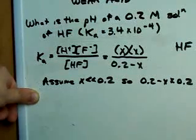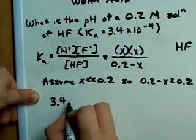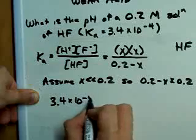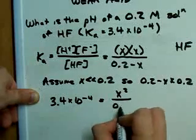Approximate enough for these kinds of calculations. If that's the case, then our Ka, or 3.4 times 10 to the minus 4, is now just X squared over 0.2.